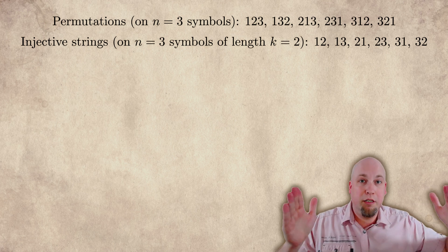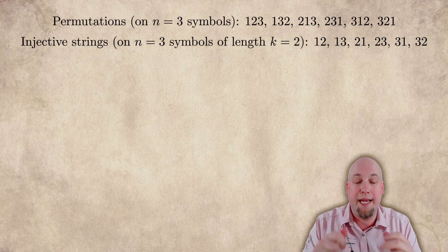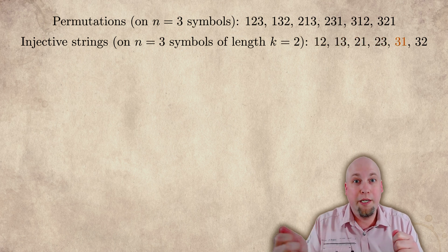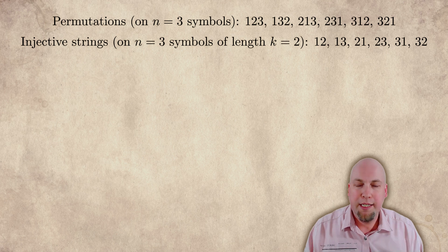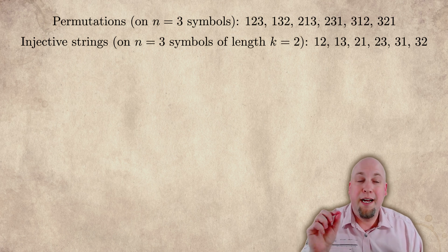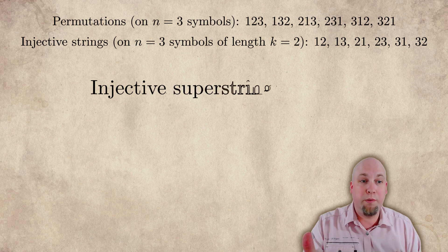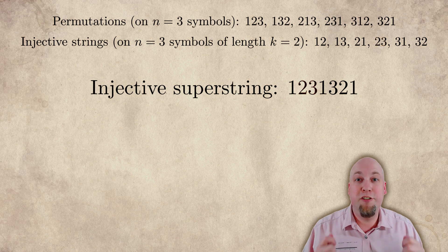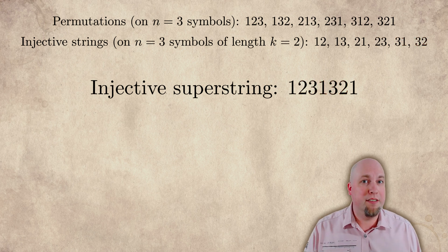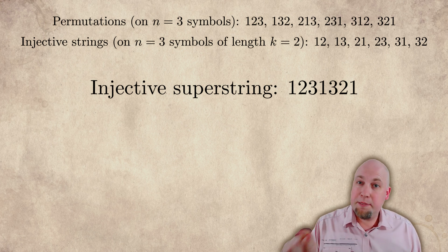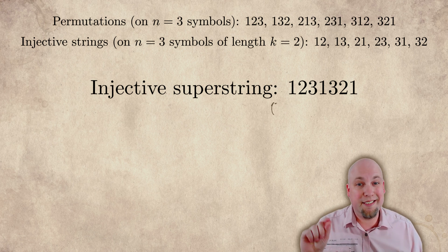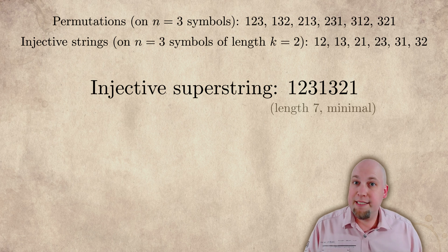So if we have three symbols, but we look at substrings of length 2 instead of length 3, and we still require the two characters in those substrings to be distinct, then the question is: what is the shortest superstring that contains all of those substrings? The substrings are going to be 1-2, 1-3, 2-1, 2-3, 3-1, and 3-2 — there are six of them. It turns out there's a superstring of length 7: you can stitch them together like 1-2-3-1-3-2-1.